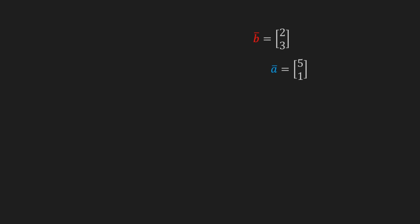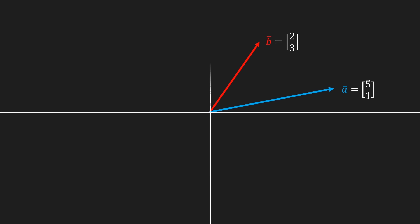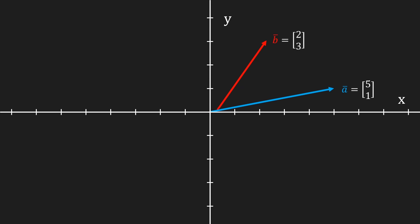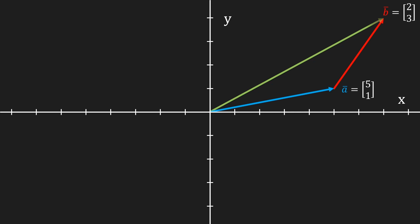That's all great and everything, but let's actually draw these vectors and visualize the result of their addition. To visualize that I'm gonna move vector b's tail to the tip of vector a. The result of their addition is then a new vector that starts at the tail of vector a and ends at the tip of vector b.